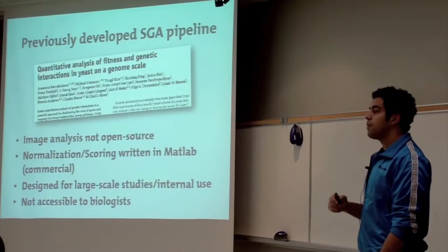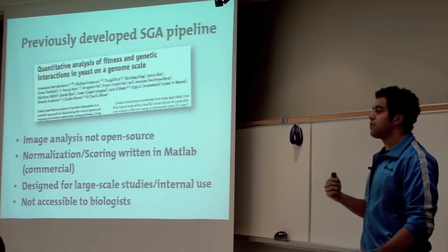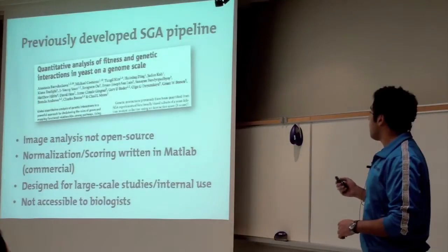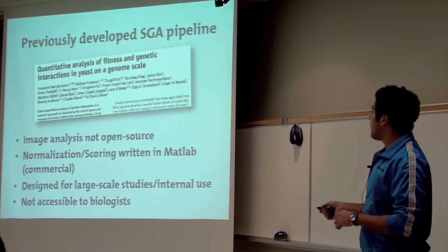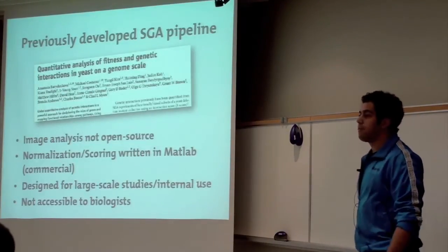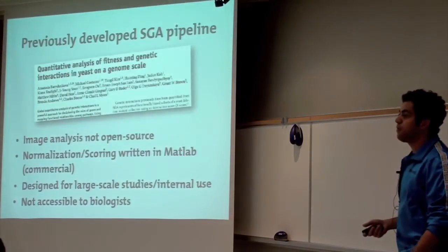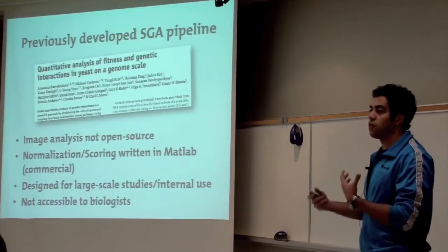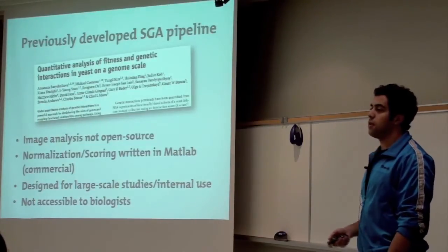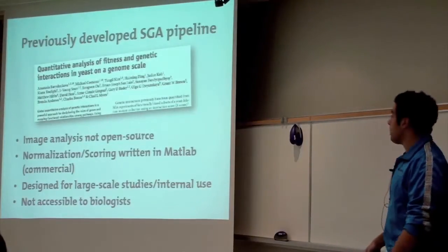But the code that she wrote, the software that she wrote was, firstly, the image analysis wasn't really open source, so it wasn't really accessible to everyone in the community. Normalization and scoring that was used was written in MATLAB, which is commercial, so it's not really open source, so people can't modify it, people can't use it as they wish if they don't have access to MATLAB. It was really designed for large-scale studies, so for more genome-wide stuff as compared to just one screen or if you have one or two screens. And most importantly, it wasn't accessible to biologists. So biologists, if you didn't know how to handle code, you really had no way of interacting with this kind of stuff.